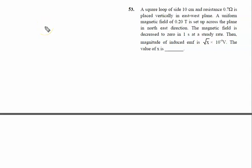A square loop of side 10 centimeters and resistance 0.7 ohm is placed vertically in the east-west plane. This is the east-west plane: north, south, east, and west directions are marked.